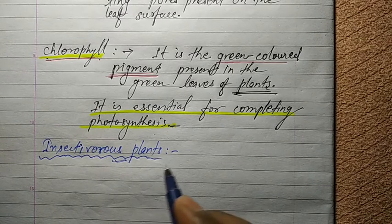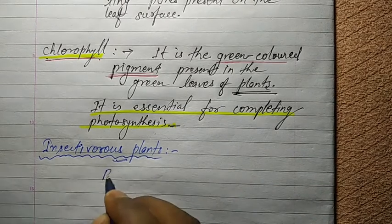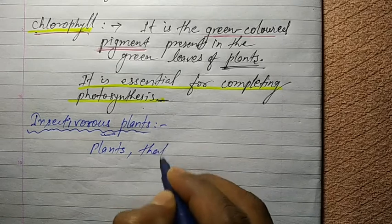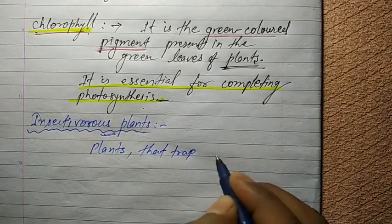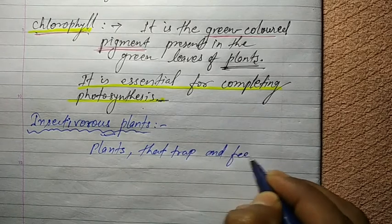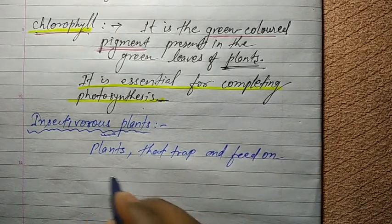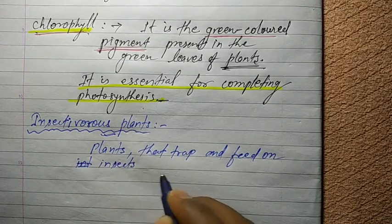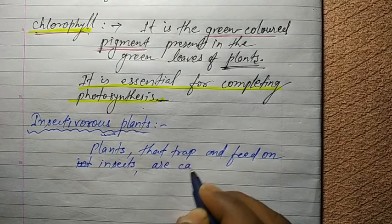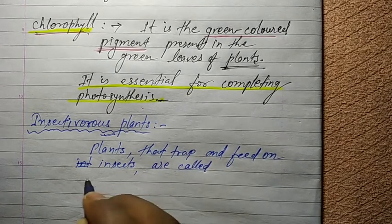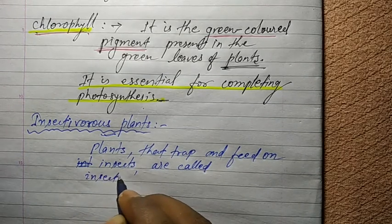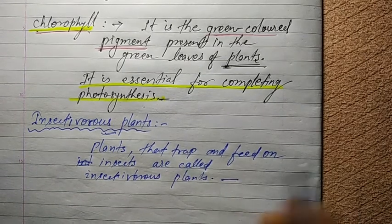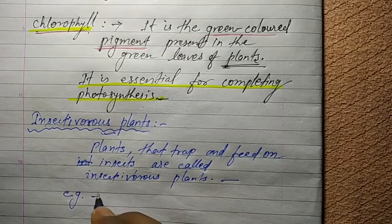So how can we define insectivorous plants? Plants that trap and feed on insects are called insectivorous plants.